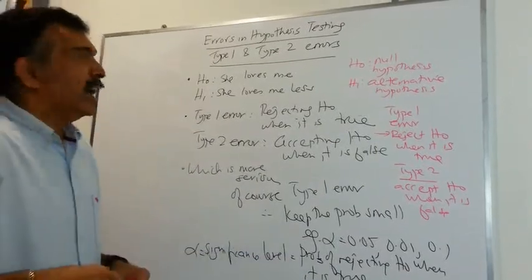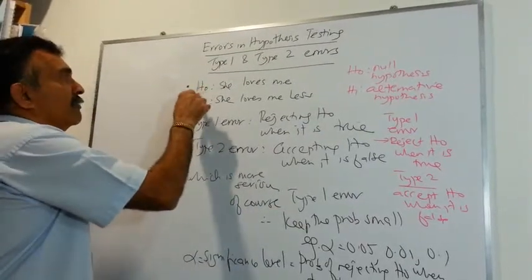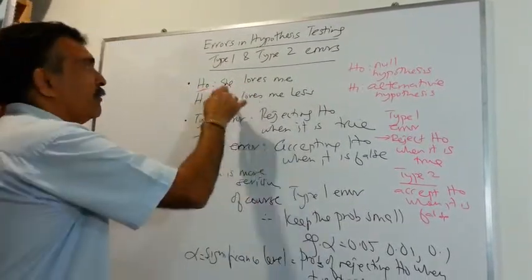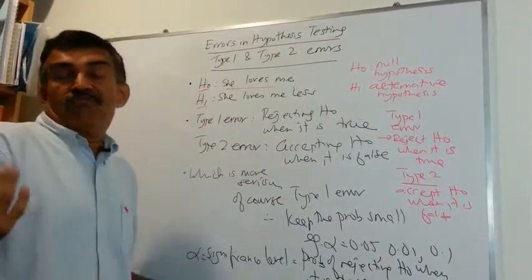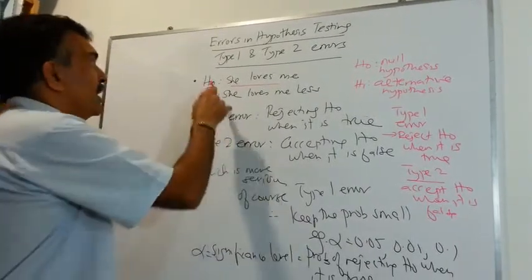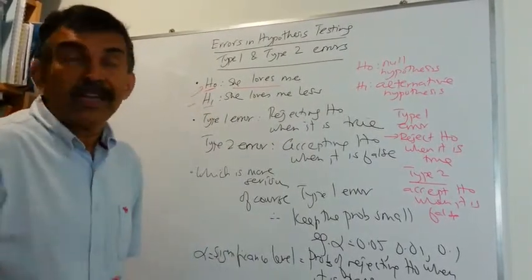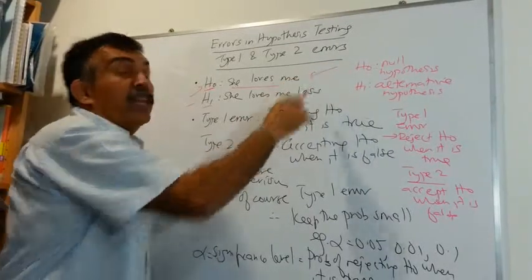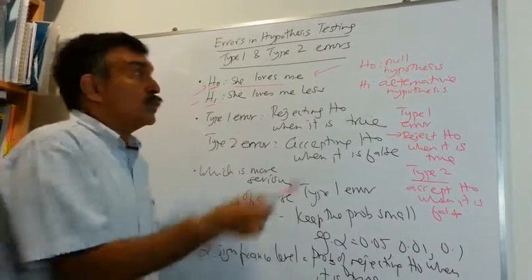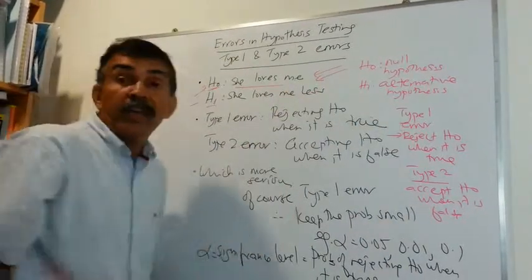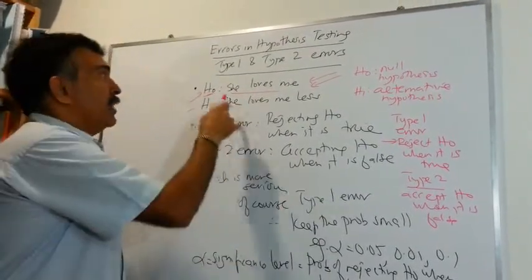So to talk about the ideas, I have used a simple example. Let's say H0, she loves me. H1, she loves me less. So we are talking about the null hypothesis, she loves me and H1, she loves me less. Because somebody has always loved me. Now, I'm trying to think about the fact, I feel that she loves me less. This is something that I know for a fact. I have been going out with somebody for 10 years. I know she loves me. So H0, she loves me.